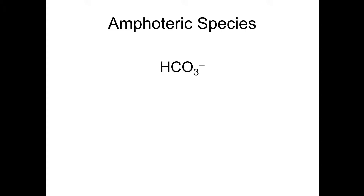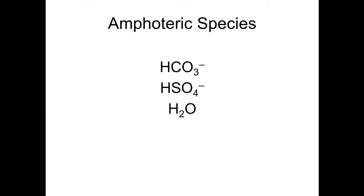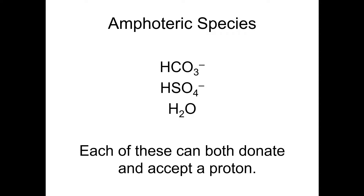Let me talk about what are called amphoteric species. An amphoteric substance simply means a substance that could act as either an acid or a base. The bicarbonate ion — remember, baking soda is sodium bicarbonate — because it has a negative charge, it can be a base and accept a hydrogen; and because it has a hydrogen atom on it, it can be an acid and donate a hydrogen. Bisulfate is another example: it has a negative charge to accept an H⁺, and it has a hydrogen atom to donate an H⁺. Water, although it doesn't have a negative charge, does like ammonia have non-bonding electrons, so it can both donate a proton to form the hydroxide ion or accept a proton to form the hydronium ion.